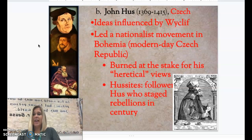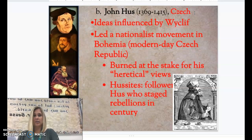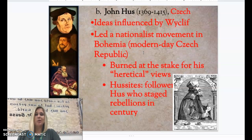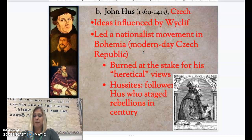Our next example of a critic of the Catholic Church, who was also before the Reformation, was Jan Hus. He was from Bohemia, which is modern-day Czech Republic, where he led a nationalist movement. He was greatly influenced by Wycliffe, coming along right after him. His ideas are very similar to Wycliffe's in that he thought the Catholic Church was too formal or too fancy and needed to be more simple in their worship services.